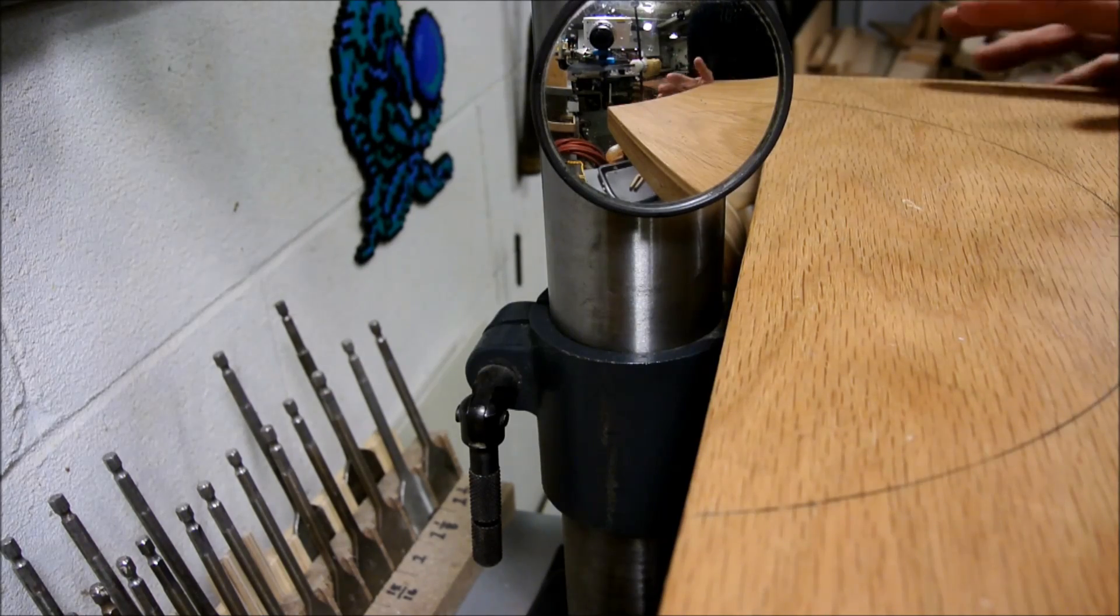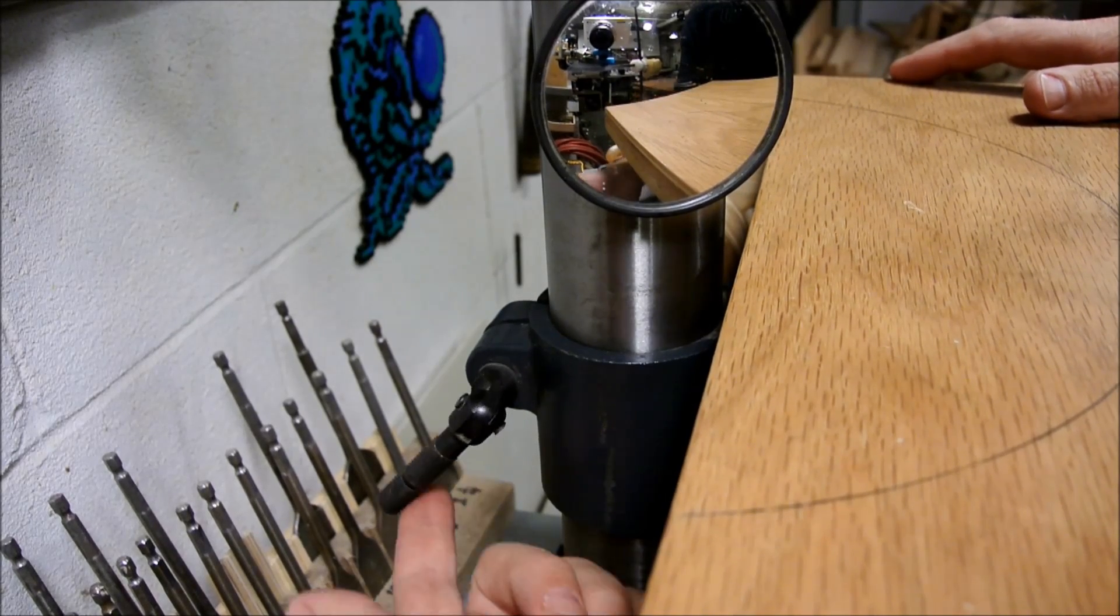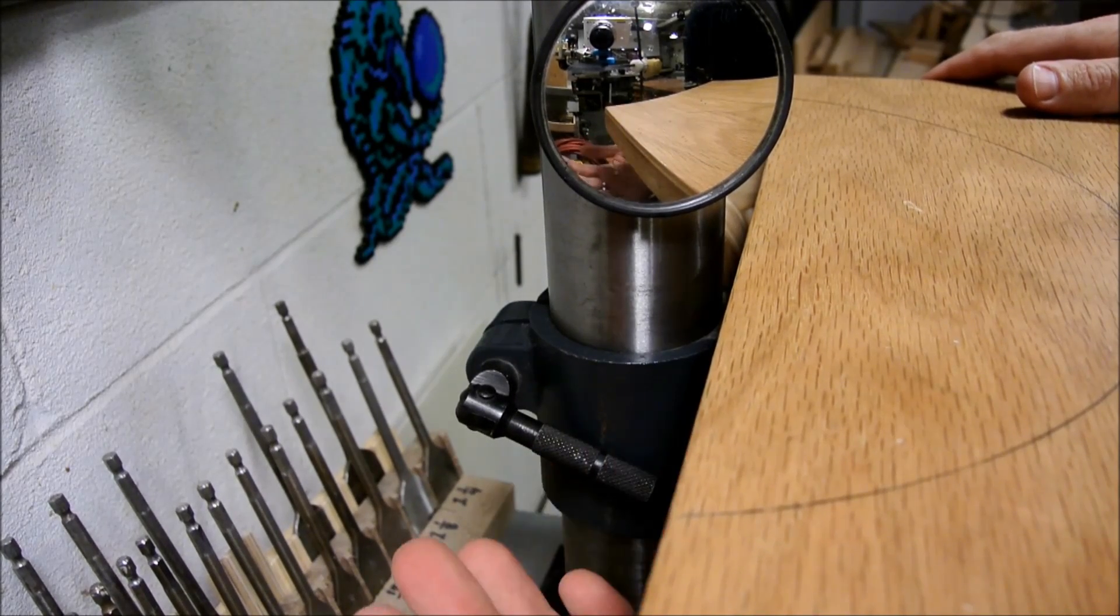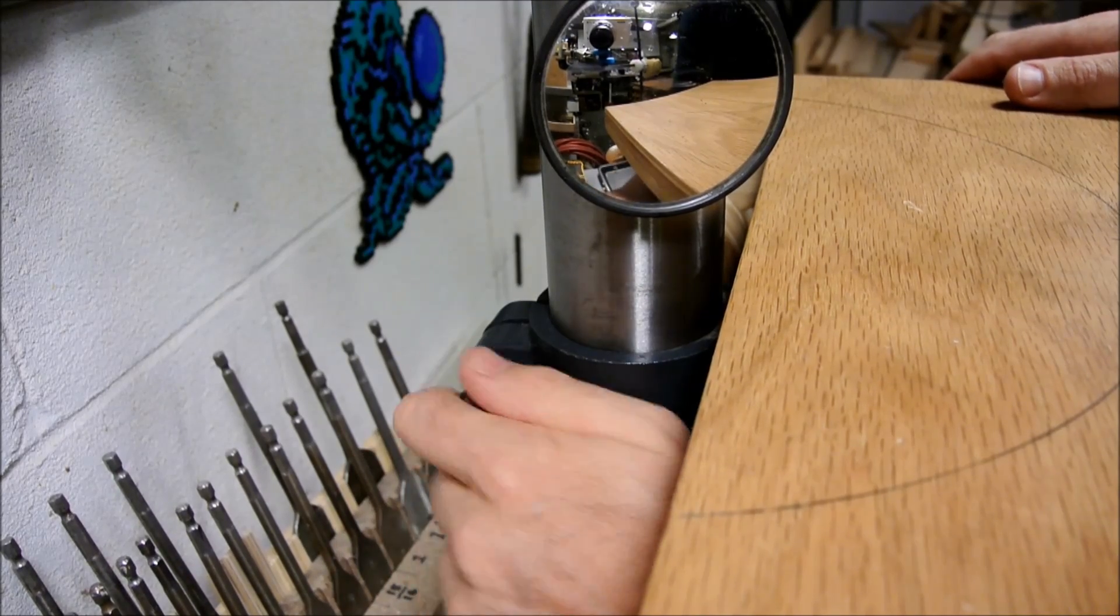We can certainly now adjust the drill press based on what we know, but we can also further reduce random error by tightening the table to the post and taking this test to the next level.